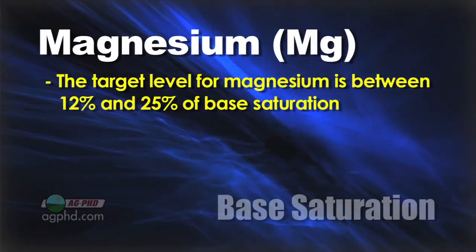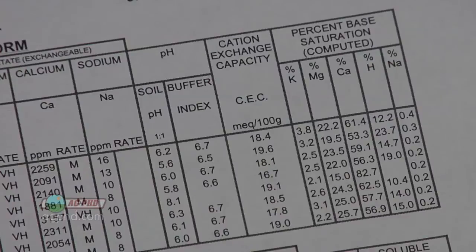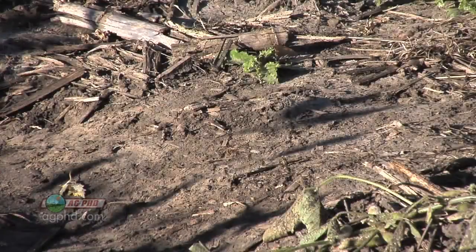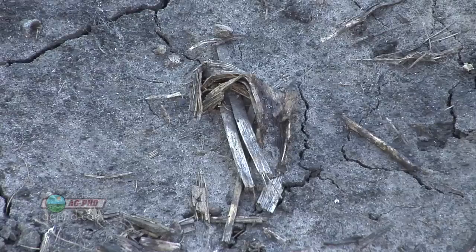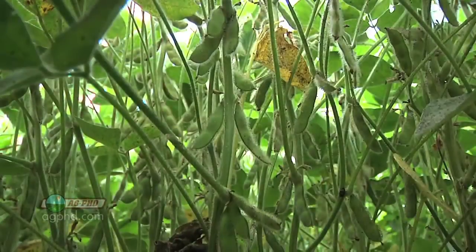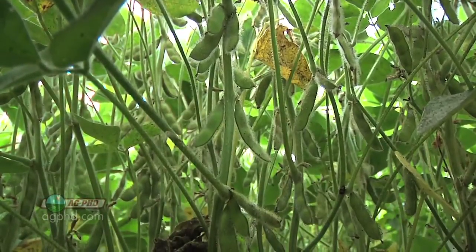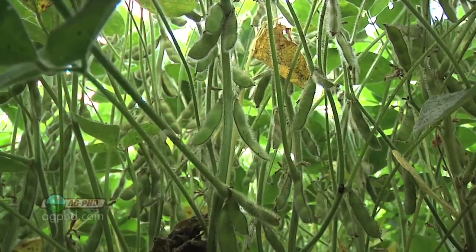When you have more percentage in magnesium, that means less percentage can be in other things — there's only a hundred percent. But magnesium also directly impacts potassium. If you see soils at 40 or 50 percent magnesium, you've absolutely limited the amount of potassium that's going to get into that plant. Even though you might have a lot of parts per million out there, you just can't get enough potassium into the plant when your potassium base saturation is below 4 percent.